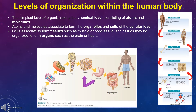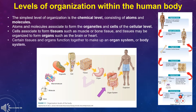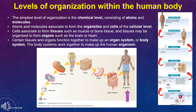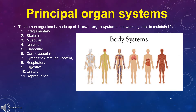Some examples of organs are the stomach, liver, lungs, brain, or heart. Certain tissues and organs function together to make up an organ system or body system. The body systems work together to make up the human organism, which is made up of 11 main organ systems that work together to maintain life.